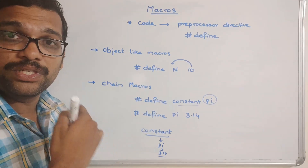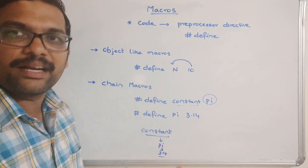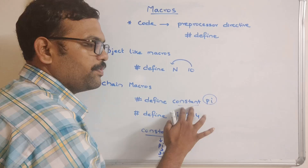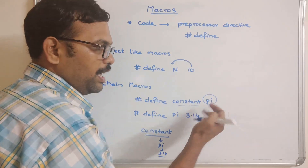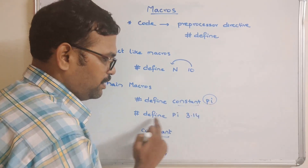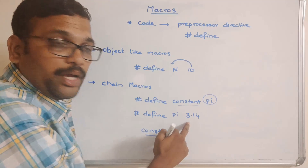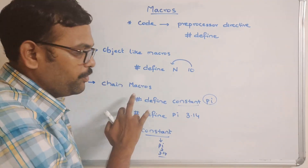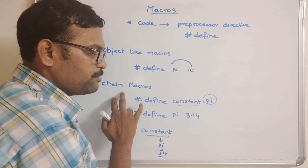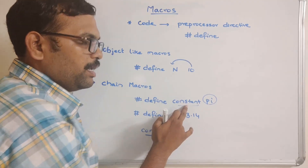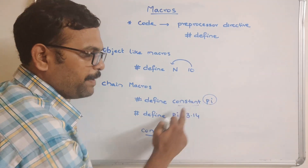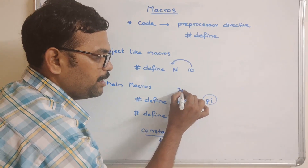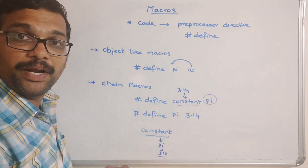In chain macros, instead of using a direct value, we give it indirectly. The first macro defines a variable pointing to a value, and that value is defined in the second macro. So if you display 'constant', it automatically resolves to 3.14.